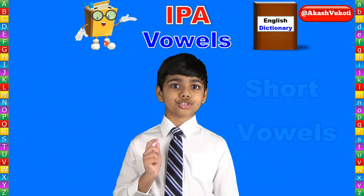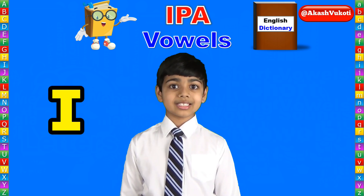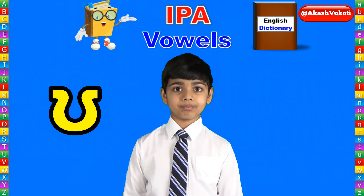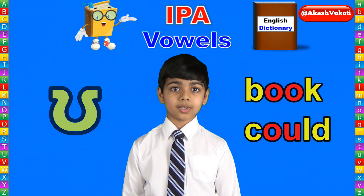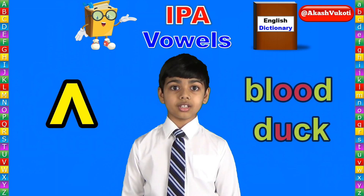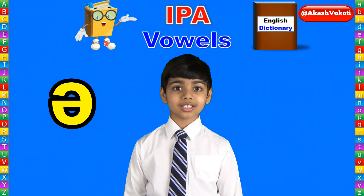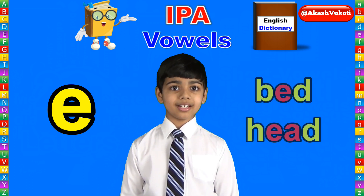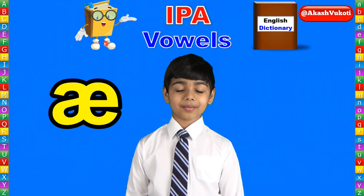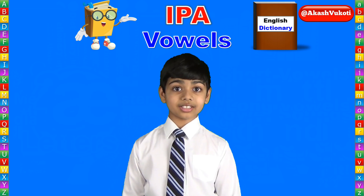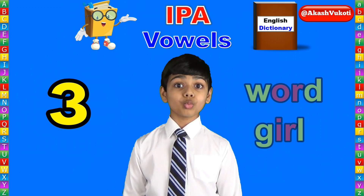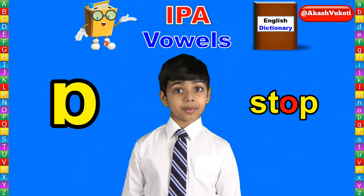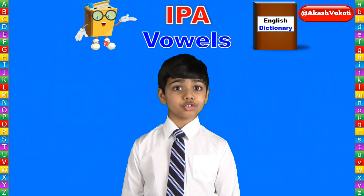Let us take a look at the short vowels. 'I' as in fish, him. 'U' as in book, could. 'Uh' as in blood, duck. 'Uh' (schwa) as in about, cinema. 'Eh' as in bed, head. 'Ah' as in mat, hand. And finally, 'ur' as in word, girl. There's also one other one, 'aw' as in stop. Let's recap and hear the short vowels once more.